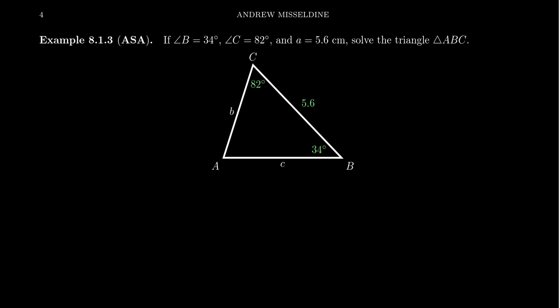So for this example, we know angle B, let's say it's 34 degrees. We know angle C, let's suppose it's 82 degrees. And then let's suppose that the side length a, which sits between them, measures at 5.6 centimeters. We need to find out what is the missing angle A, and what are the two missing sides, B and C, right here.